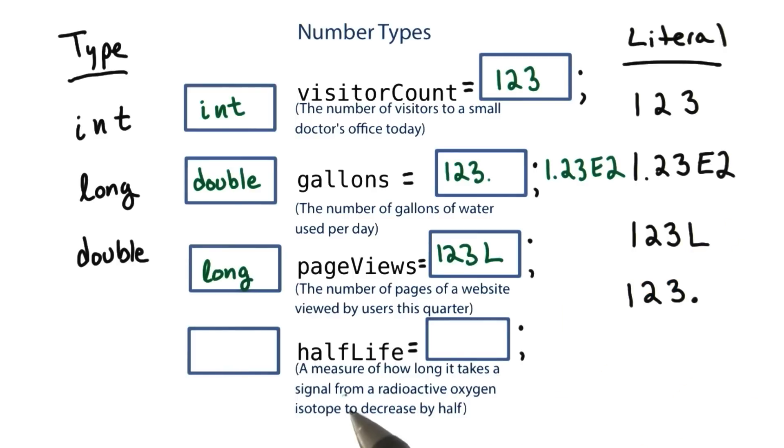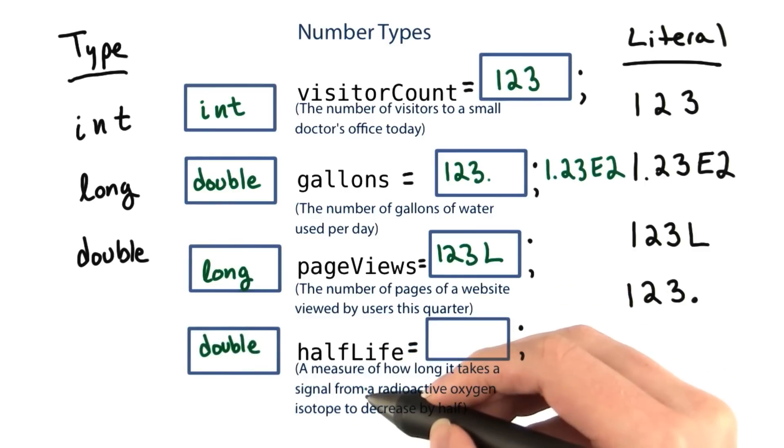Half-life, a measure of how long it takes a signal from a radioactive oxygen isotope to decrease by half, is another double. There's nothing to guarantee that this would be an integer value.